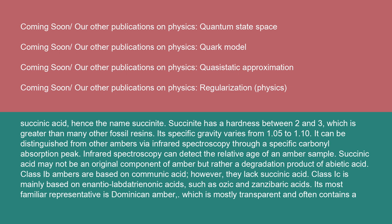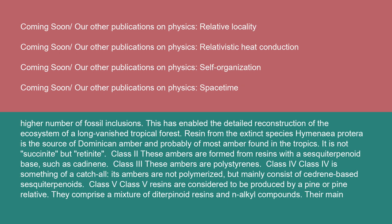Succinite can be distinguished from other ambers via infrared spectroscopy through a specific carbonyl absorption peak. Infrared spectroscopy can also detect the relative age of an amber sample. Succinic acid may not be an original component of amber, but rather a degradation product of abietic acid. Class IB ambers are based on communic acid; however, they lack succinic acid. Class IC is mainly based on enantiolabdanoid acids, such as ozic and zanzibaric acids. Its most familiar representative is Dominican amber, which is mostly transparent and often contains a higher number of fossil inclusions. This has enabled the detailed reconstruction of the ecosystem of a long-vanished tropical forest. Resin from the extinct species Hymenaea protera is the source of Dominican amber and probably of most amber found in the tropics. It is not succinite but retinite.